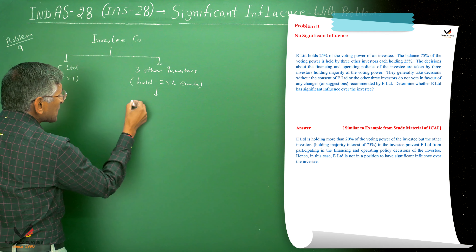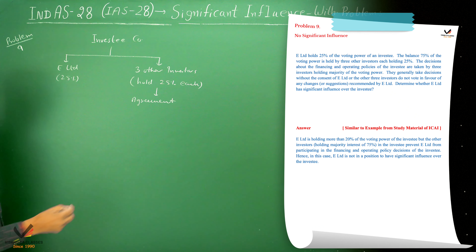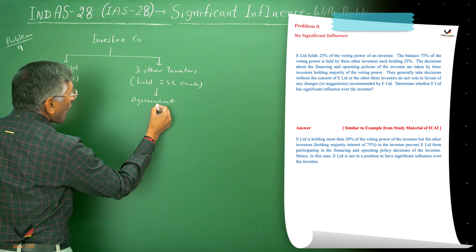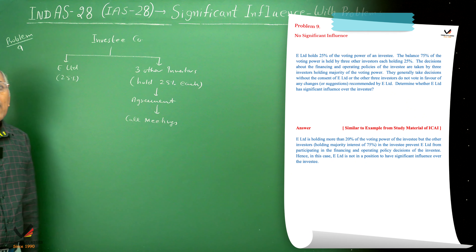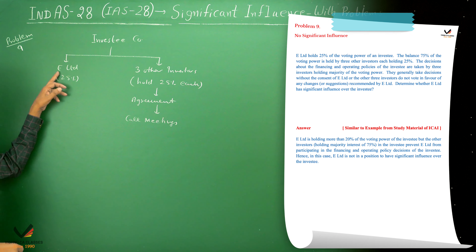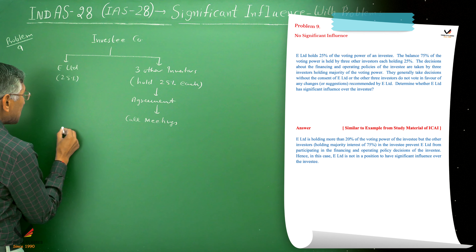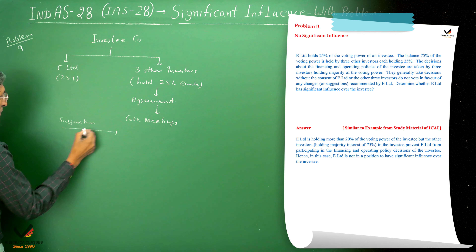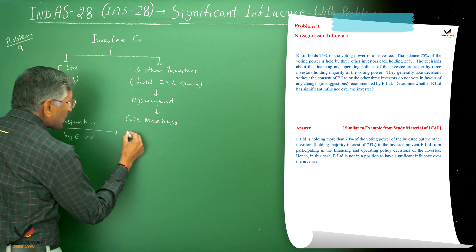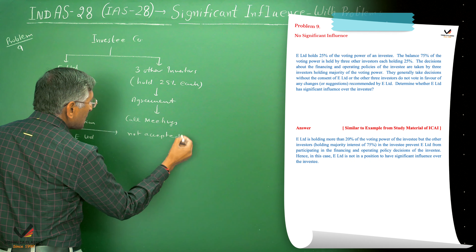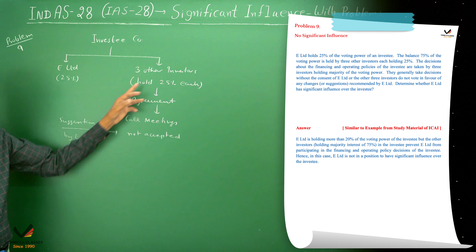However, there is a contractual agreement among these 3 investors. They call meetings and take decisions together. Whenever Illimitally provides any suggestion, this suggestion is not accepted by these 3 investors who have the majority interest.